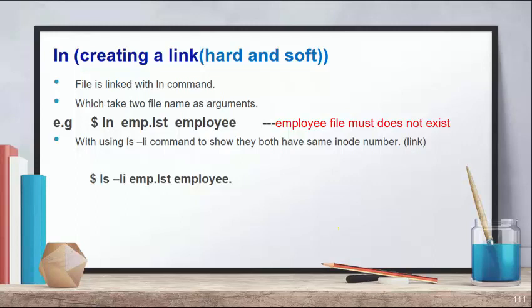To create a link, the command is ln. The ln command is used to create both hard links and soft links. For a hard link, just use ln, and for a soft link use ln -s. The ln command takes two file names as arguments — source and destination.